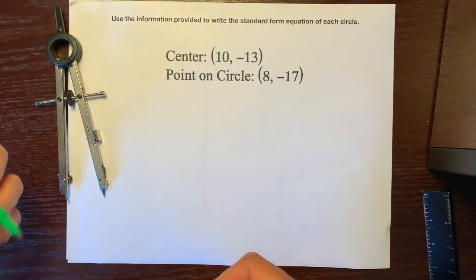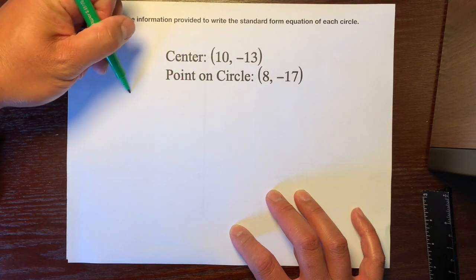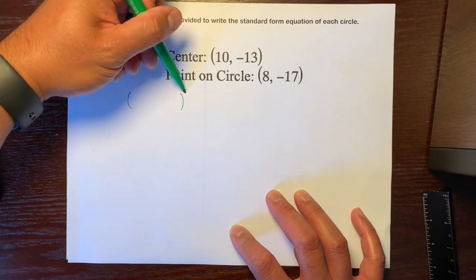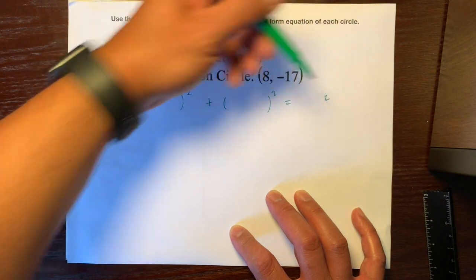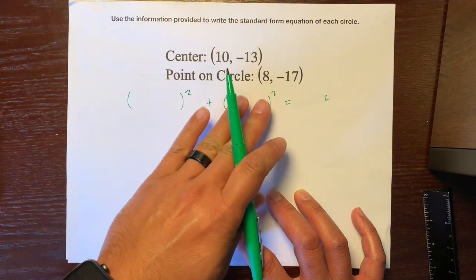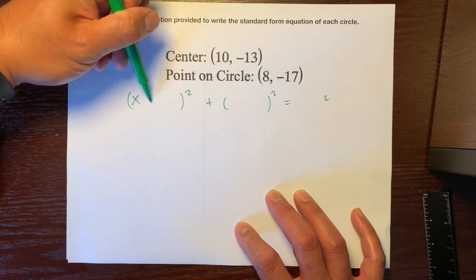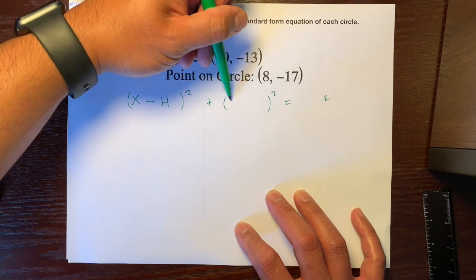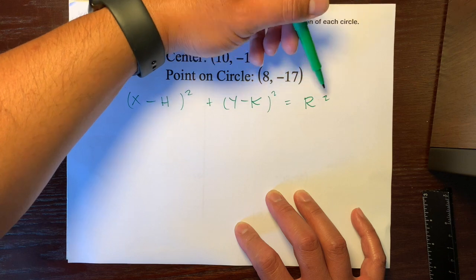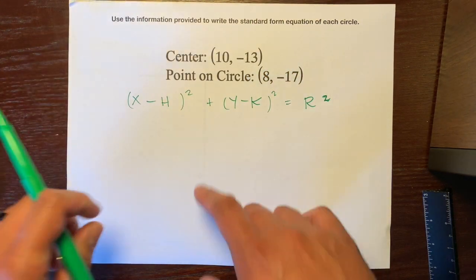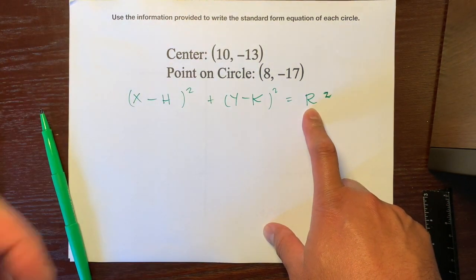Let's try to remember: what is the equation of a circle when you're trying to graph it on a coordinate plane? We start off remembering the equation looks like the Pythagorean theorem, because that's really how we got that equation. Something squared plus something squared equals a hypotenuse squared. So it's (x minus h) squared plus (y minus k) squared equals r squared.